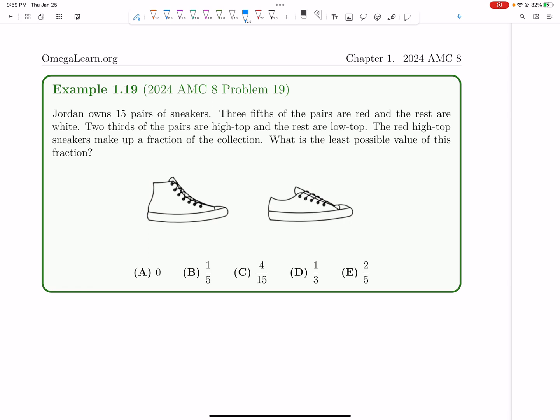Two-thirds are high-top, and the rest are low-top. The red high-top sneakers make up a fraction that are both red and high-top, and we're asked to find the least possible value of this fraction.